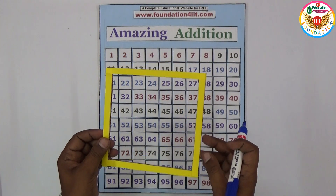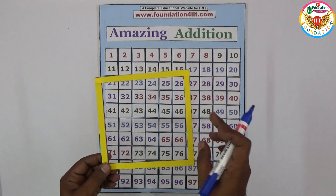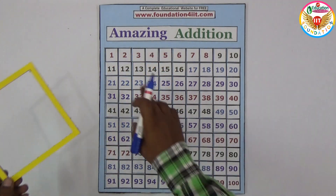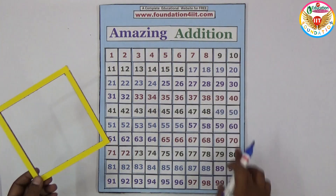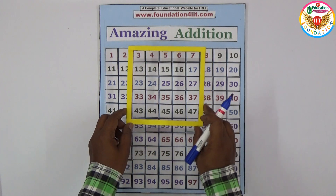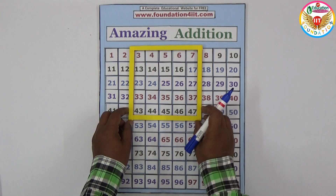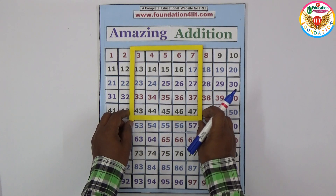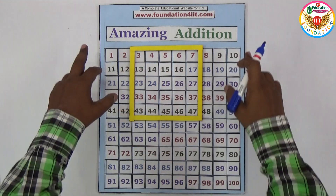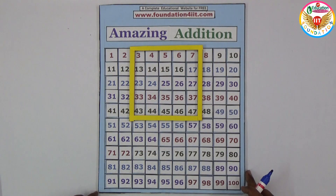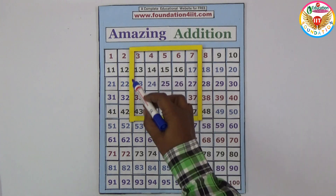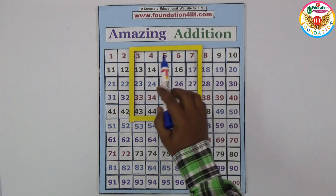This is a 5 by 5 strip — 5 rows and 5 columns. The main board is a 10 by 10 grid. You can place this 5 by 5 strip anywhere within the 1 to 100 number board — just keep it anywhere you like.